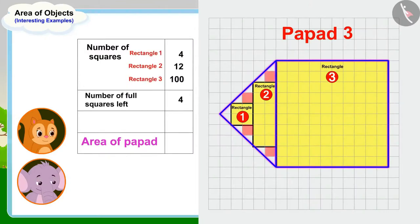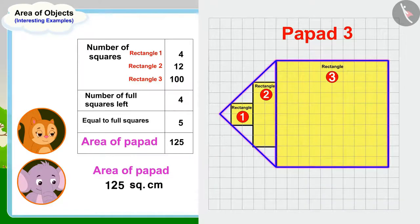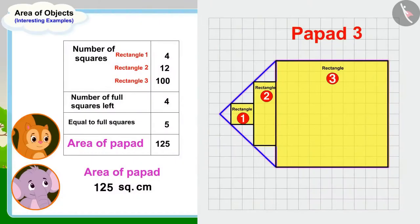We can find the area of this papar by making rectangles and squares in this way. The area of this papar is 125 square centimeters. Chanda and Appu also found the area of the third papar.